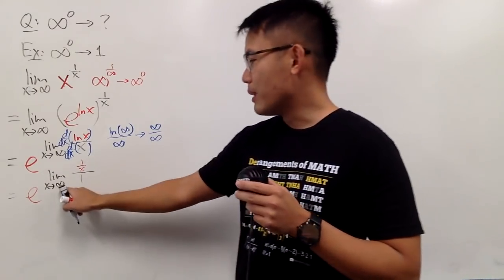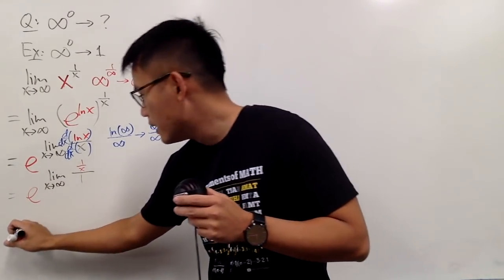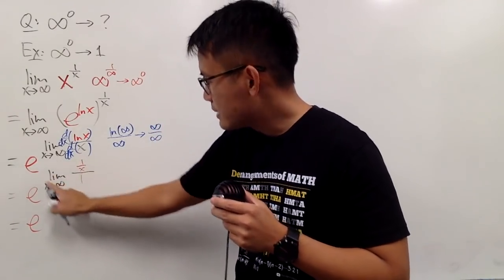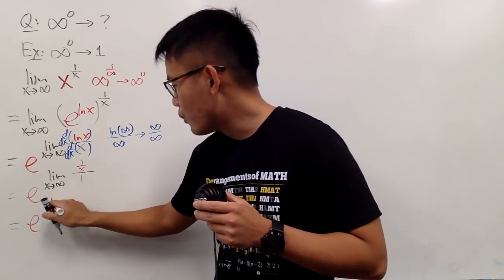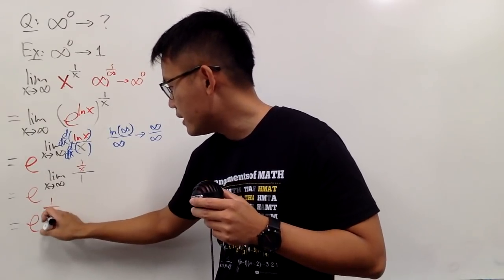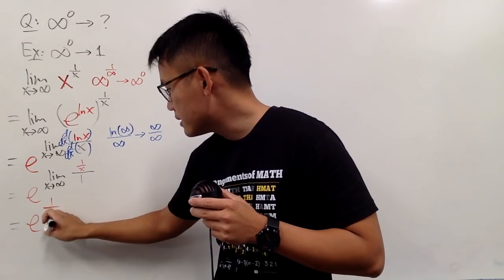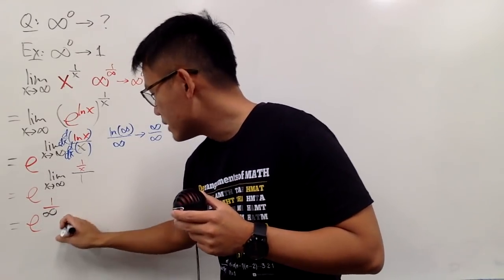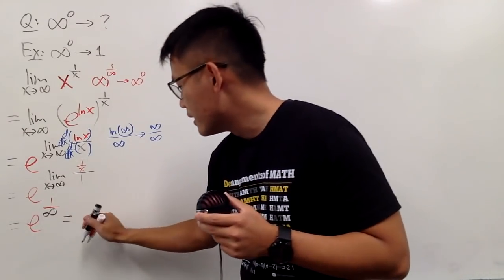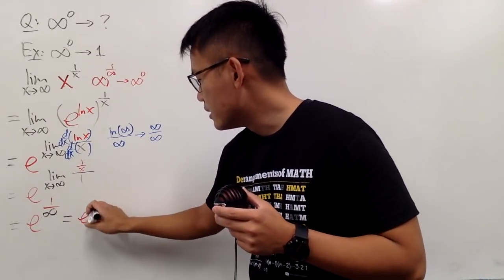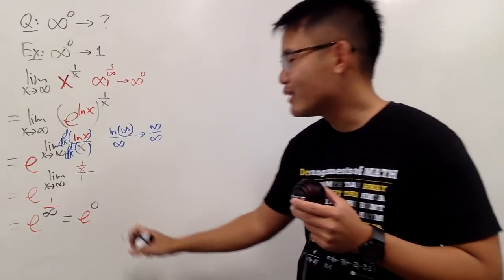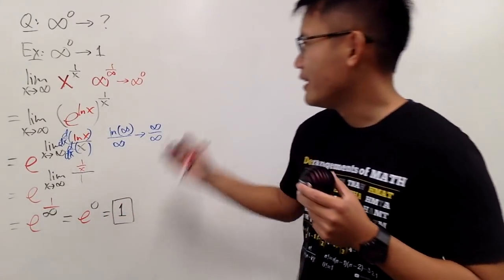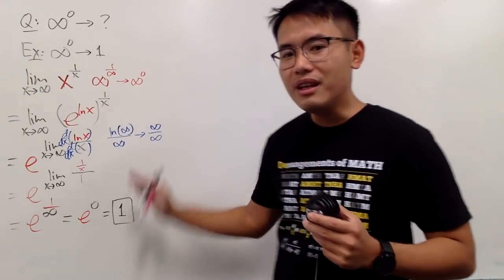Now I just plug infinity into x. We have e for the base, and the exponent becomes 1 over infinity, which is just zero. So we get e to the zero's power, and working that out gives 1. So the answer to this limit question is 1.